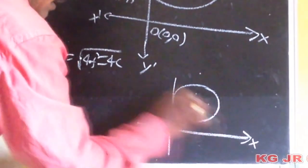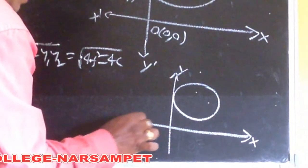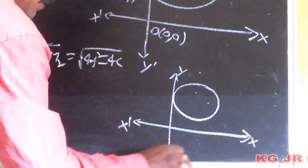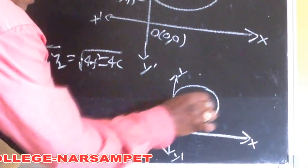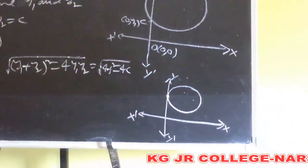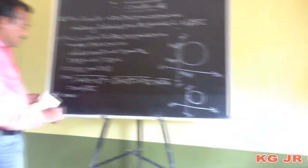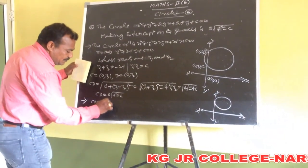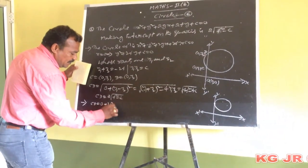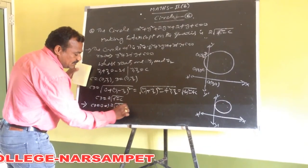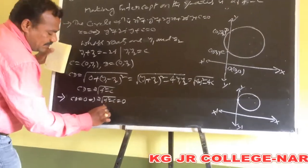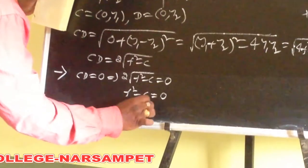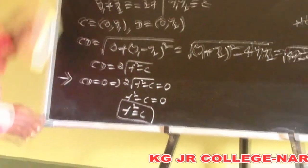The circle intersects the y-axis at one point. The condition for this: CD equals 0 implies 2 into root of f square minus c equals 0, so f square minus c equals 0, meaning f square equals c. This is the condition for the circle to touch the y-axis.